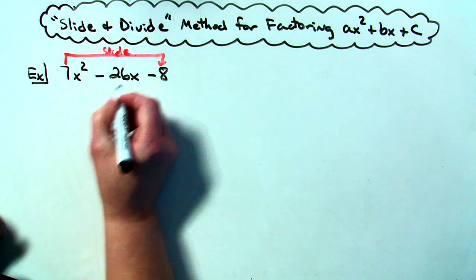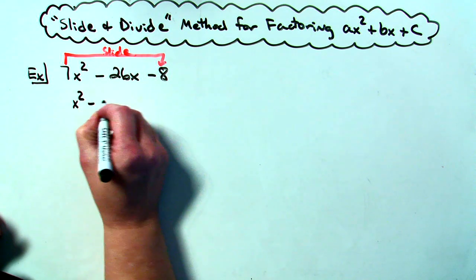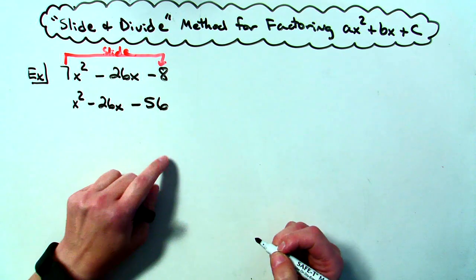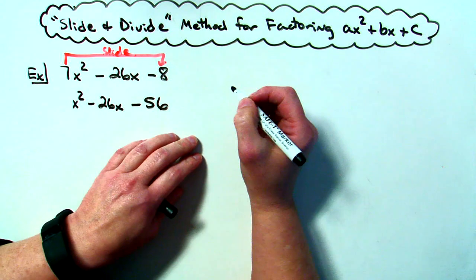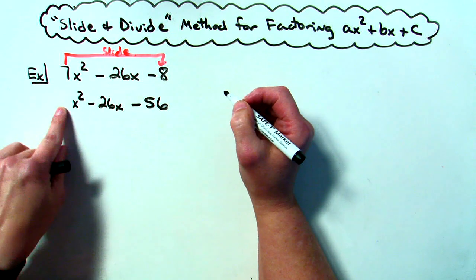So then I will rewrite since I've slid it down there's no longer in front x squared minus 26x minus 56. I've slid it down there and multiplied 7 times 8. Now I'm going to factor this.